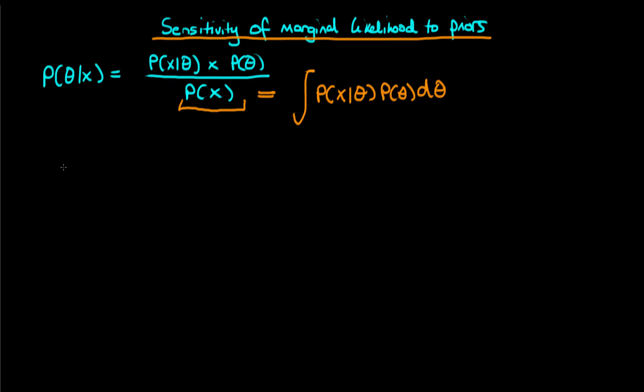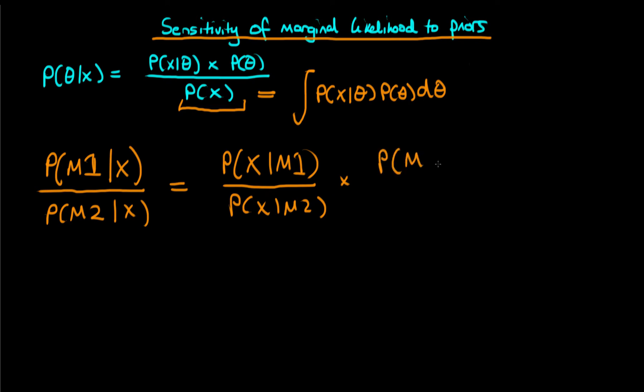So why do we actually want to calculate the marginal likelihood? Well, one of the main reasons is to do model comparison. So the idea here being that what you can do is we've seen we can work out the posterior probability of model 1 given data and divide that through by the posterior probability of another model, let's say model 2 given data. And that's just equal to the inverse of each of those, so p of x given m1 over p of x given m2.